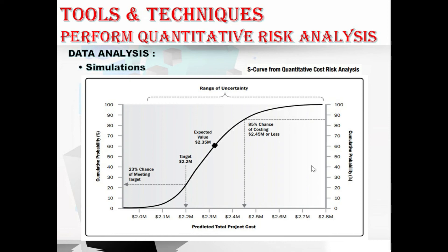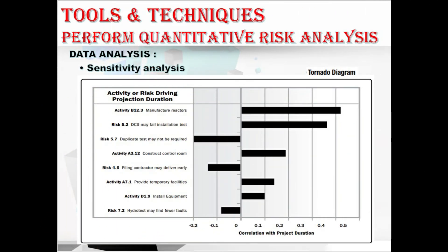The next data analysis technique is sensitivity analysis. Sensitivity analysis helps determine which individual project risk or other sources of uncertainty have the most potential impact on project outcomes. One typical display of sensitivity analysis is the Tornado diagram, which represents the calculated correlation coefficient for each element of the quantitative risk analysis model that can influence the project outcome. You can refer to the slide showing how activity duration is displayed in the Tornado diagram.